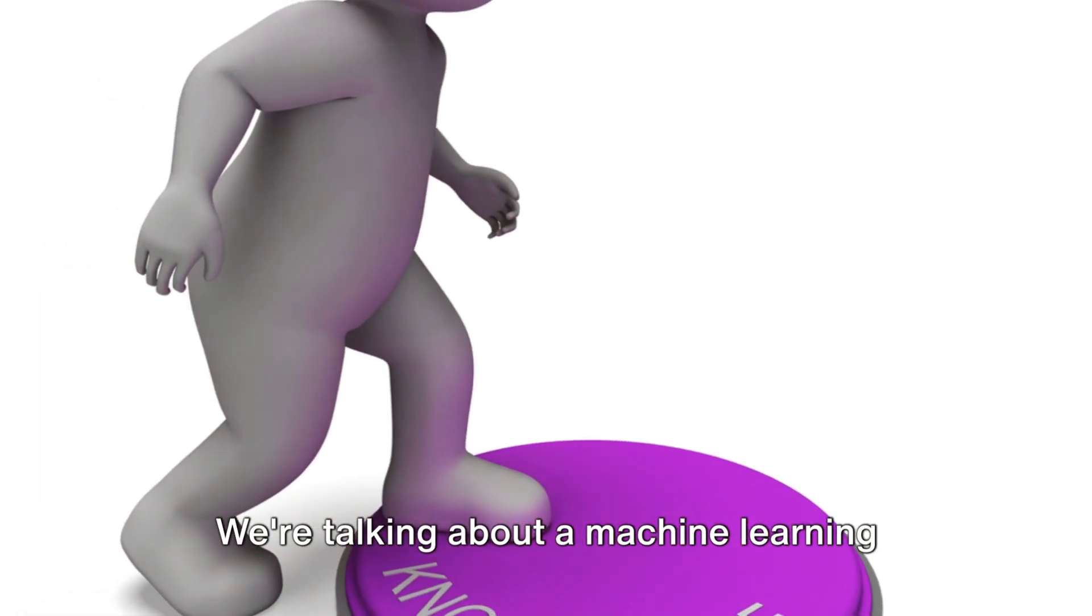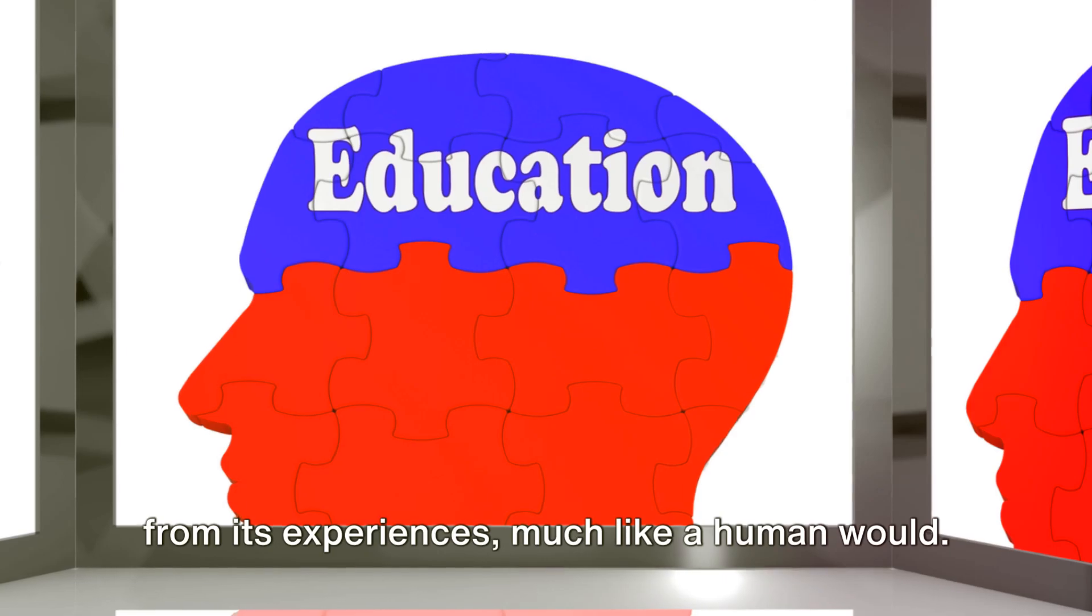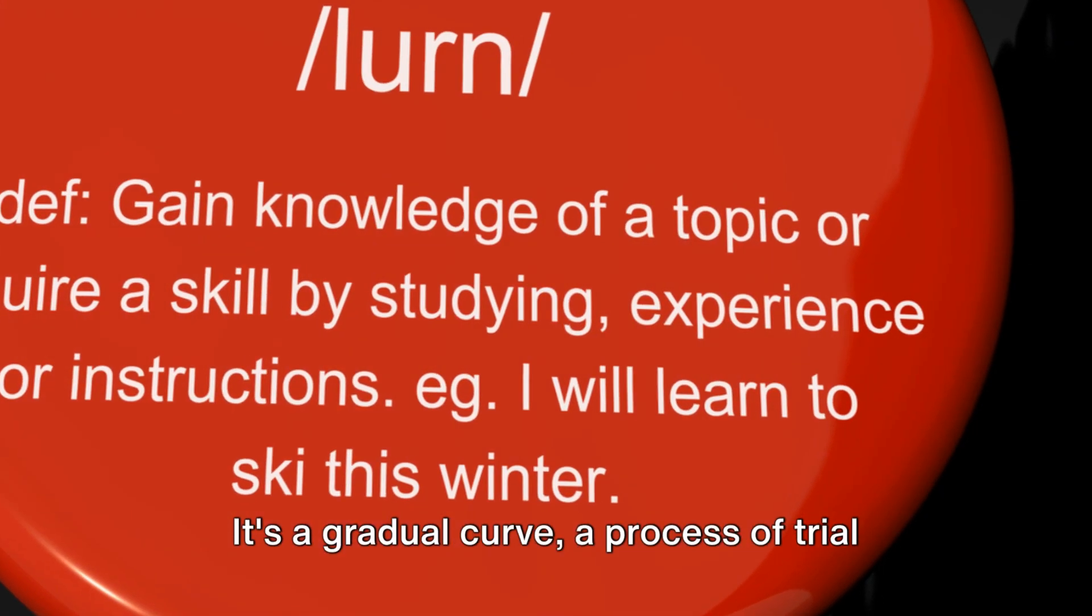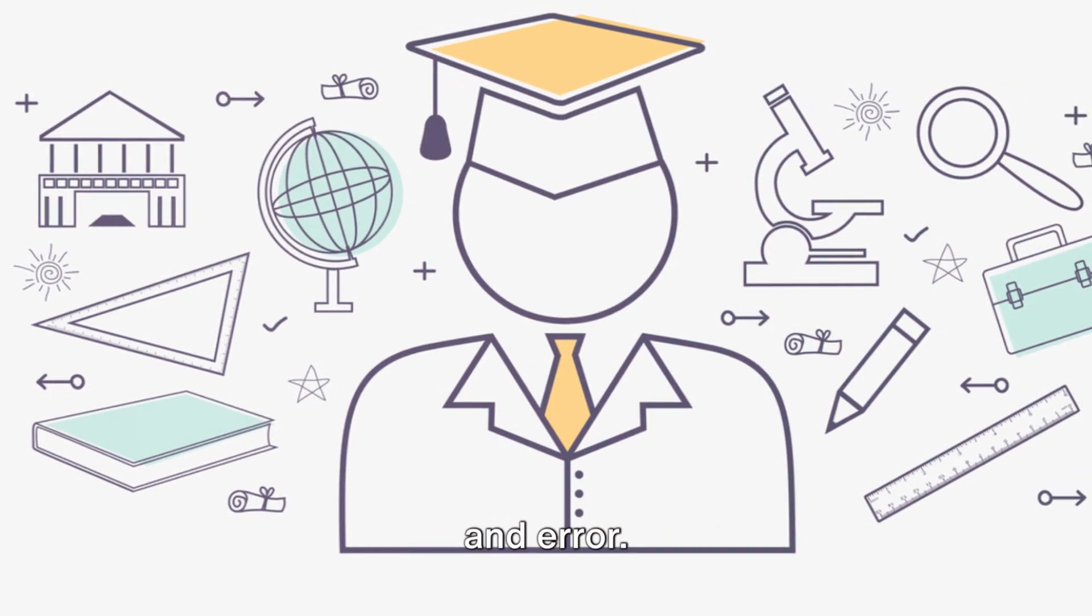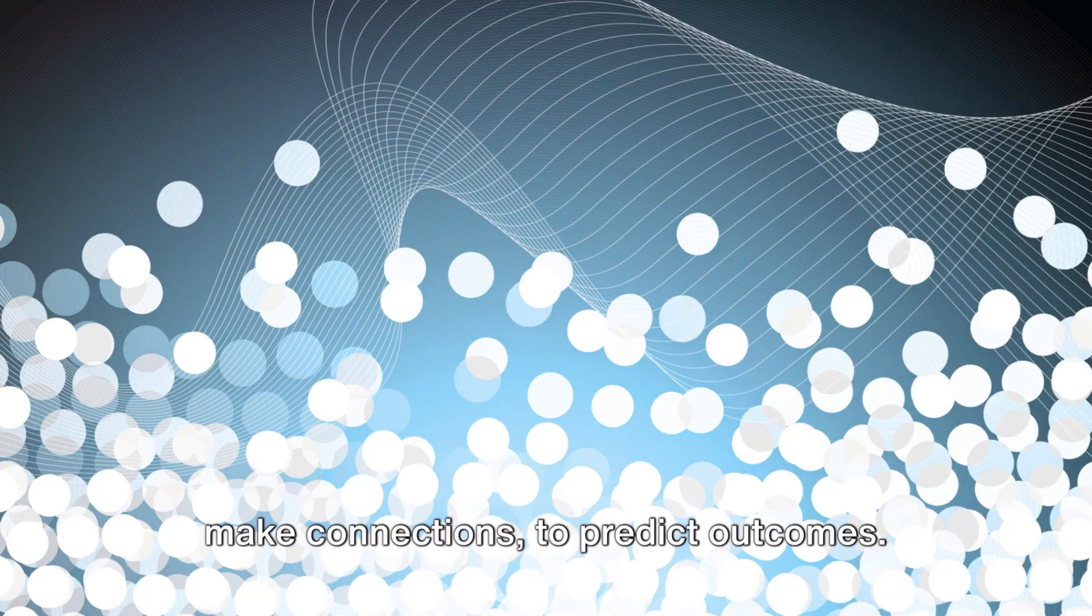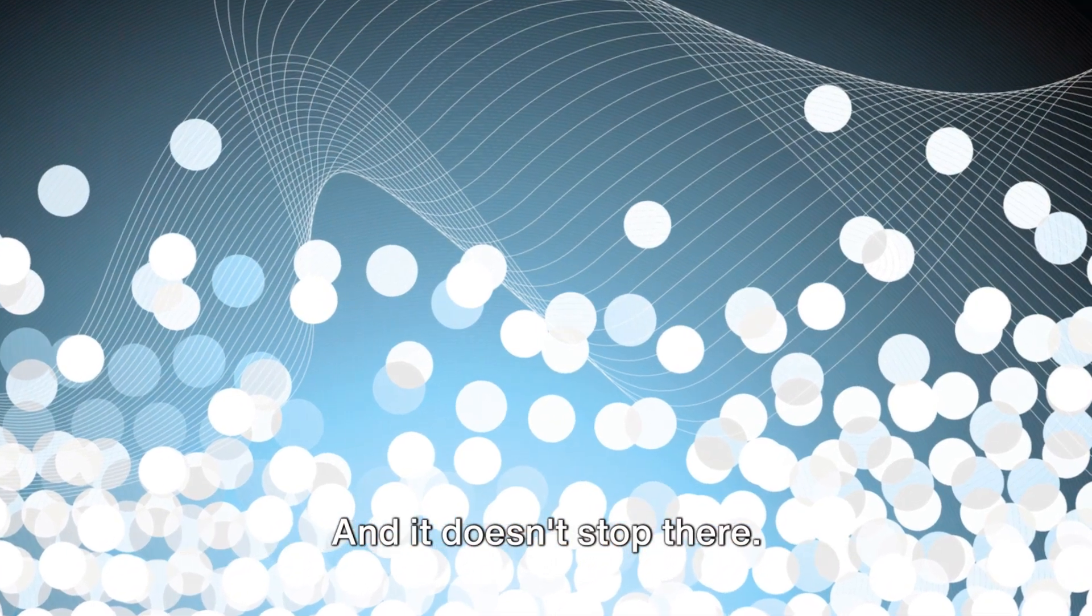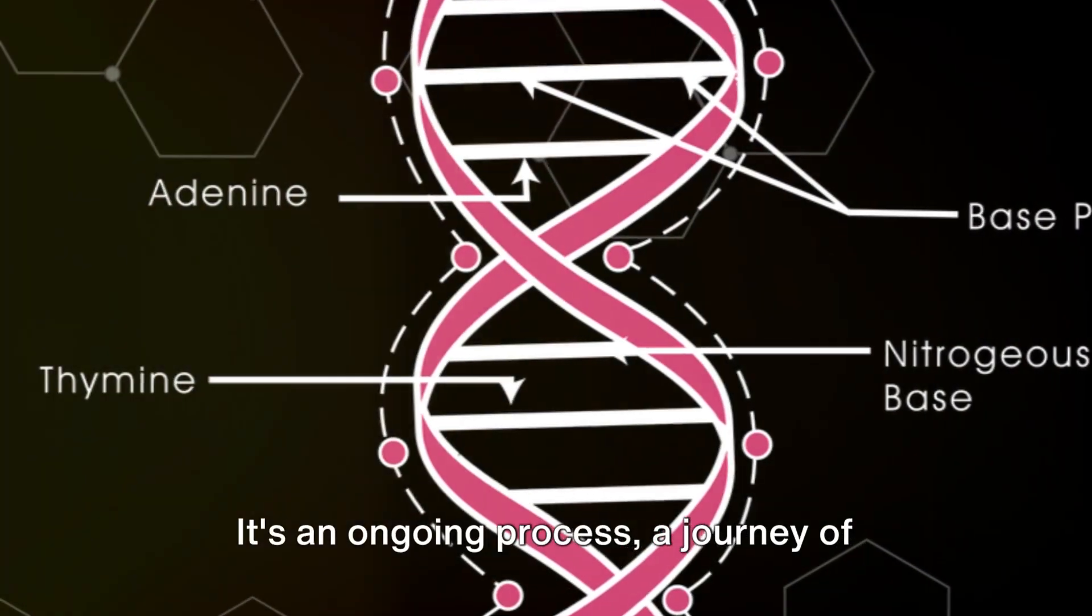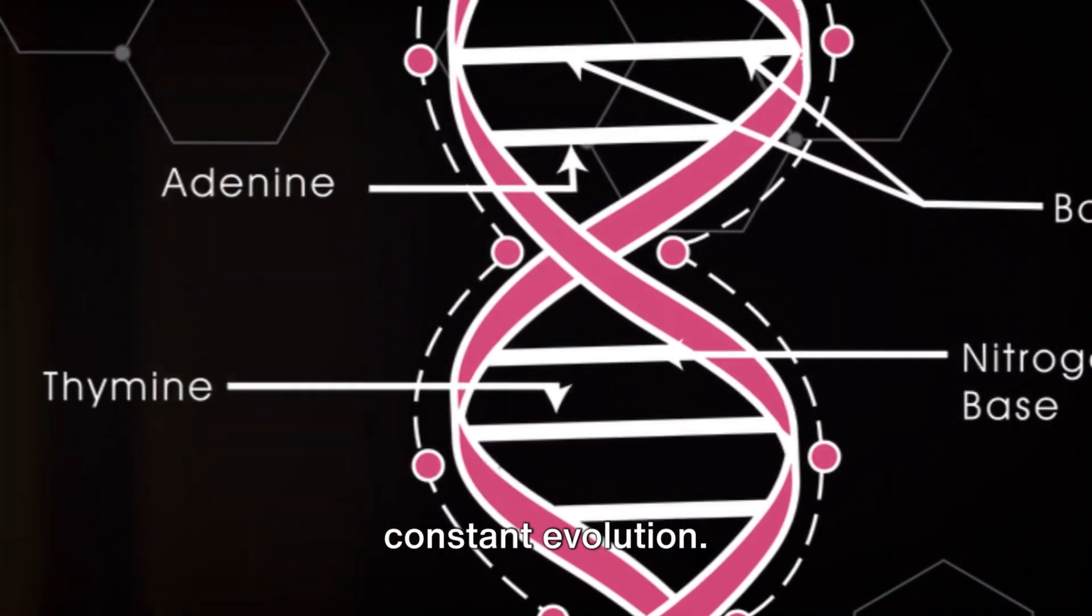This learning process is guided by algorithms and trained using vast amounts of data. We're talking about a machine learning from its experiences much like a human would. It's not instant, it's not immediate. It's a gradual curve, a process of trial and error. The AI learns to recognize patterns, to make connections, to predict outcomes, and it doesn't stop there. The AI continues to learn, to adapt, to improve. It's an ongoing process, a journey of constant evolution.